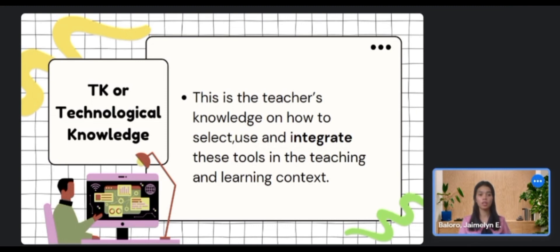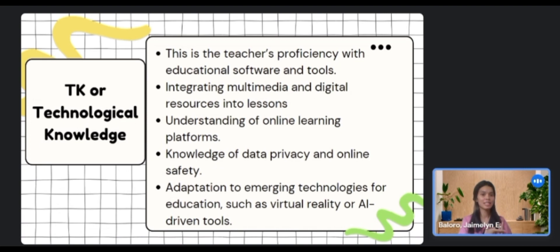The third component is the TK or Technological Knowledge. In this, the teacher should have the knowledge on how to select, use, and integrate tools or technology into teaching. In the teaching and learning process, he or she should understand how various technologies work and how they can be applied in educational settings. This includes knowledge about software, hardware, and digital tools. Some examples of TK include teachers' proficiency with educational software and tools, integrating multimedia and digital resources into lessons, understanding of online learning platforms, knowledge of data privacy and online safety, and adaptation to emerging technologies for education, such as virtual reality or AI-driven tools.